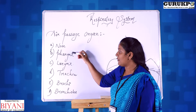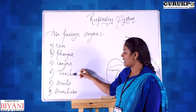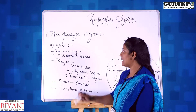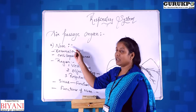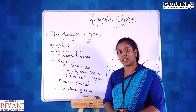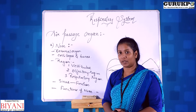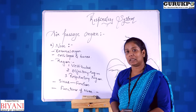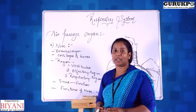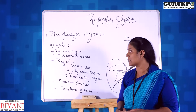Now let us see the air passage organs in the respiratory system: nose, pharynx, larynx, trachea, bronchi, and bronchioles. Let us see the first part, that is the nose. The nose is the external part which connects the body to the internal organs. It collects the air, which passes through the nasal cavity and then to the lungs.